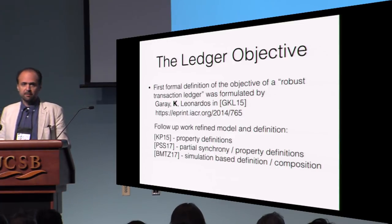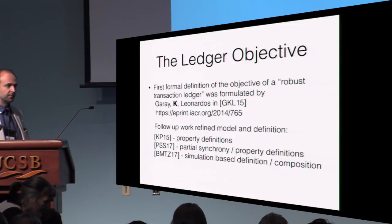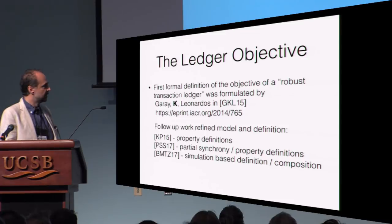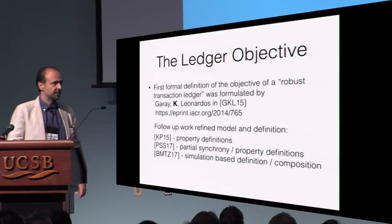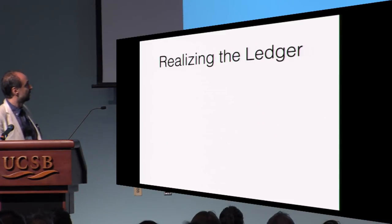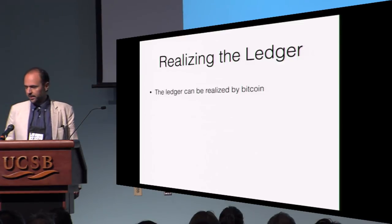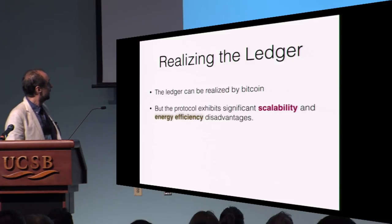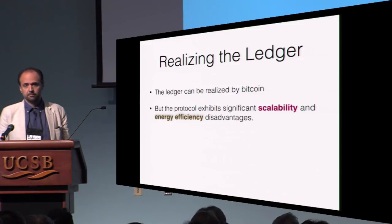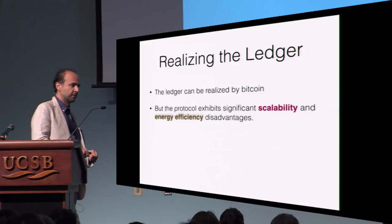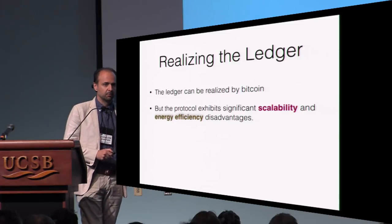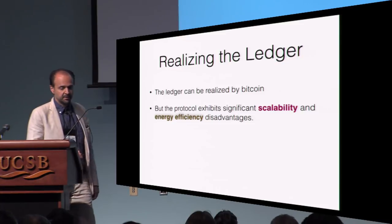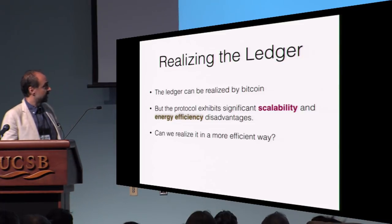Once you have an objective which is cleanly defined, you can ask: do we know the best way to realize it? We know the ledger can be realized by Bitcoin based on previous works, but we also know from how the protocol actually works in the real world that it has significant scalability and energy efficiency disadvantages. So can we realize it in a more efficient way?